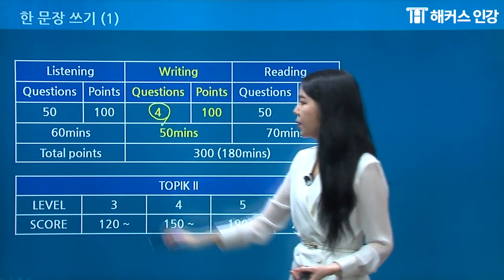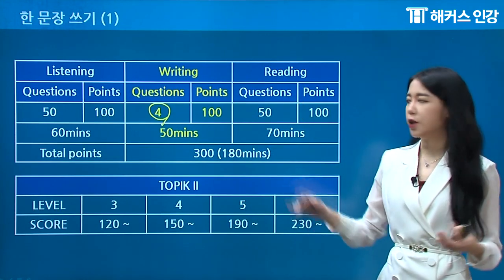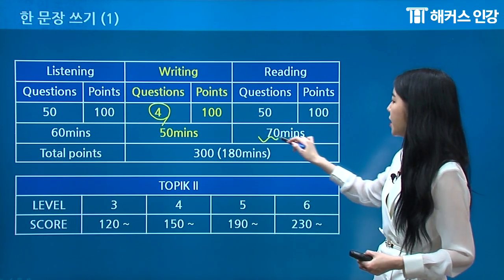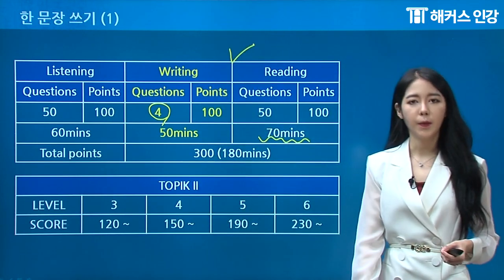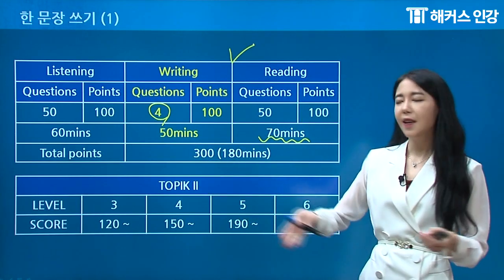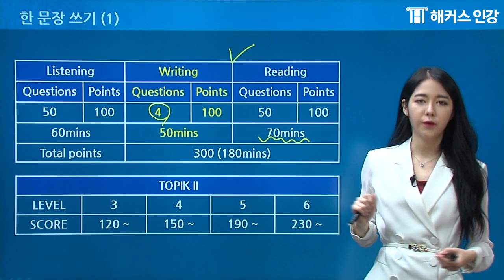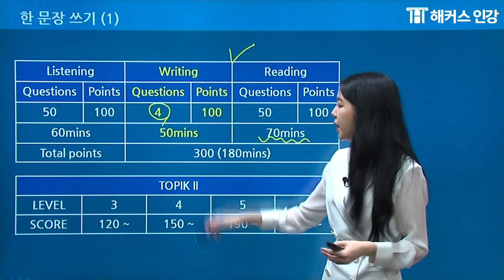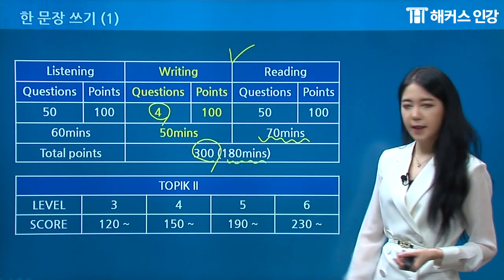For writing, there are only going to be four questions. For reading, there are going to be 50 questions, exactly the same as listening — 100 points, same thing — and they give you 70 minutes. They're going to give you a break right between listening/writing and reading. So when you take the test, listening and writing are combined, and then after the break you go into reading for 70 minutes. The total points would be 300 and 180 minutes total.